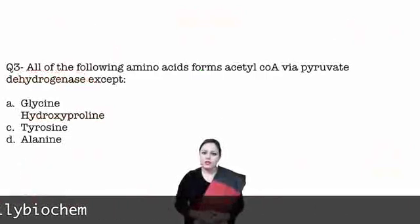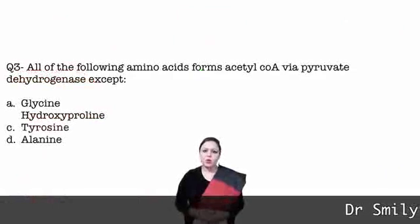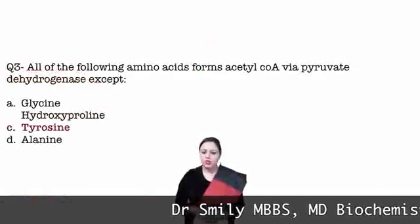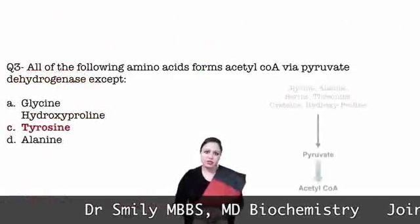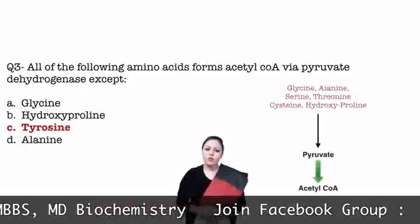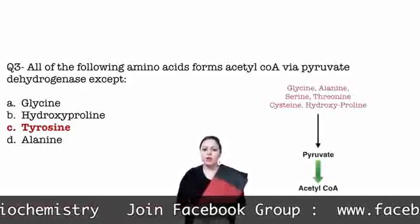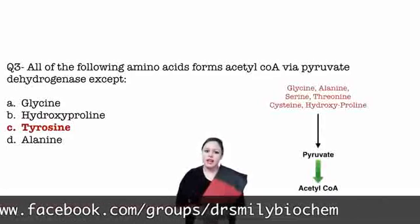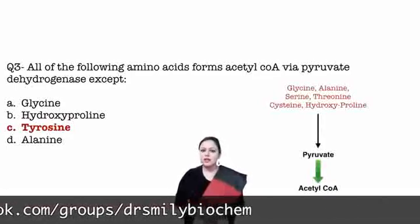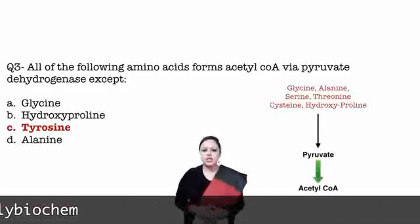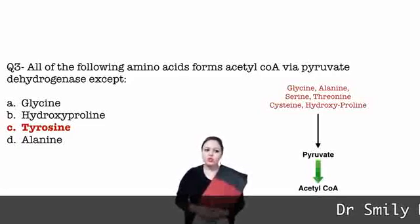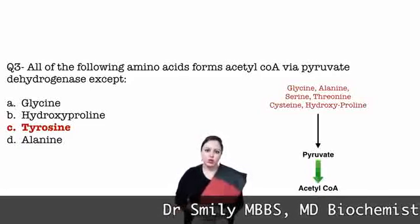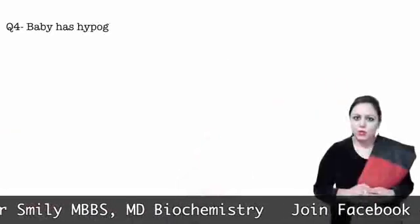They are asking which amino acids enter at the level of acetyl-CoA via pyruvate dehydrogenase, that is the link reaction enzyme. So we look at which amino acids enter at the level of pyruvate — they are six: glycine, alanine, serine, threonine, cysteine and hydroxyproline. Option C, tyrosine, is not in this list. That is the answer.